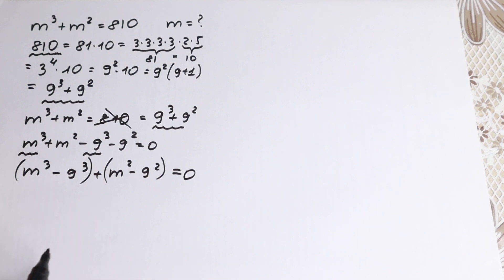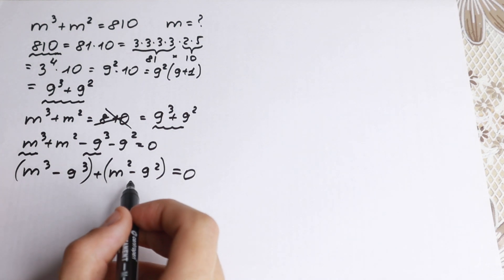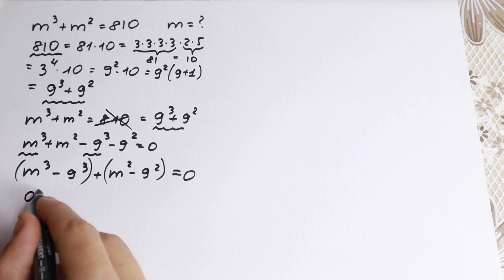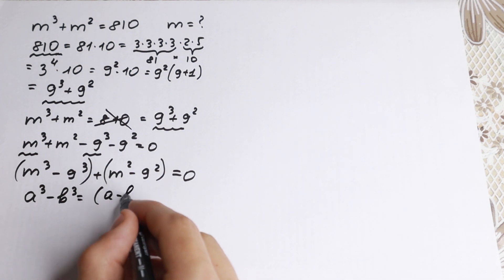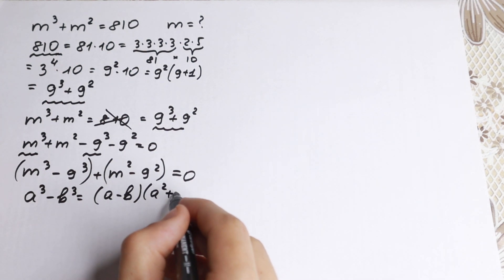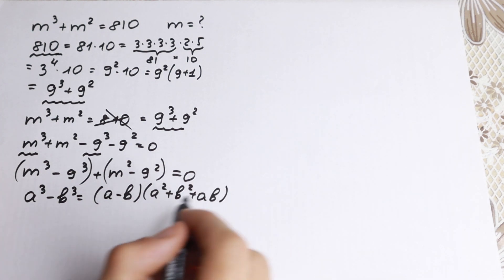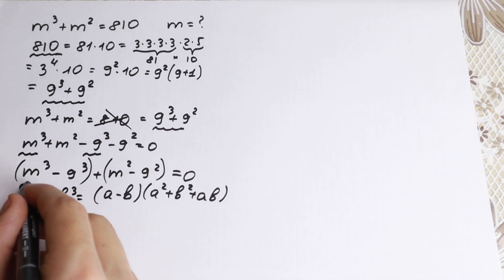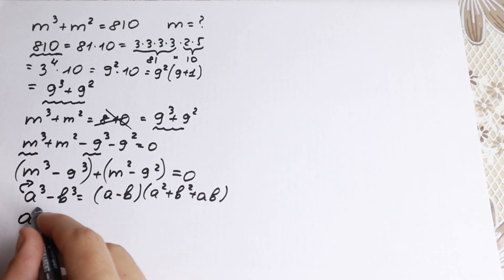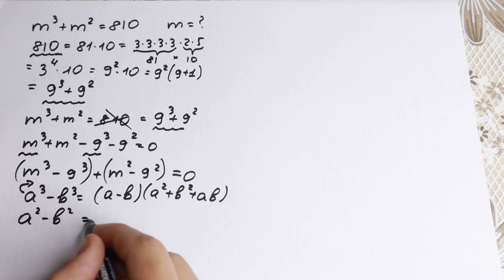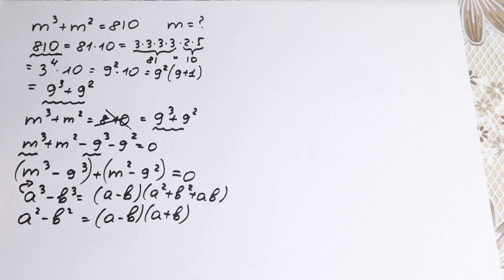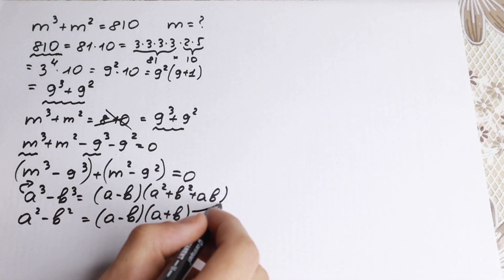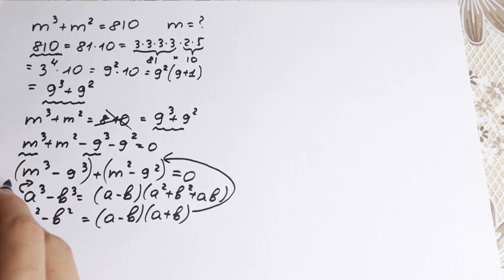We have a difference of cubes and a difference of squares, and we know the formulas for both. The difference of cubes formula is: a³ − b³ = (a − b)(a² + b² + ab). The difference of squares identity, which you may know from school, is: a² − b² = (a − b)(a + b).